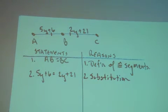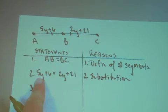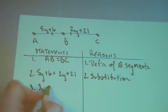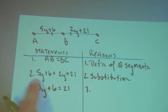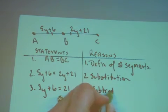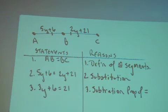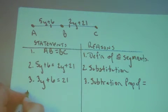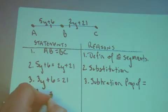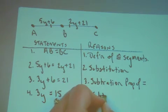Now let's do some algebra. I want this to be a clean proof. We need to combine the y terms, so this will be 3y plus 6 is equal to 21 — I subtracted the 2y, so this is the subtraction property of equality. Now I have to move the 6 over to the 21, so my fourth statement will be that 3y is equal to 15, and that was also the subtraction property of equality.